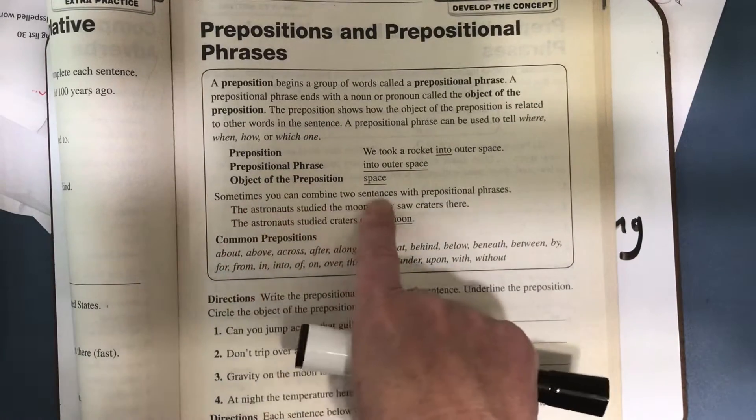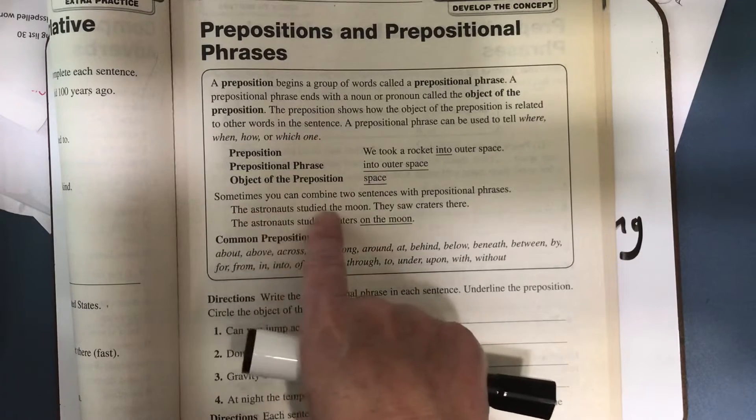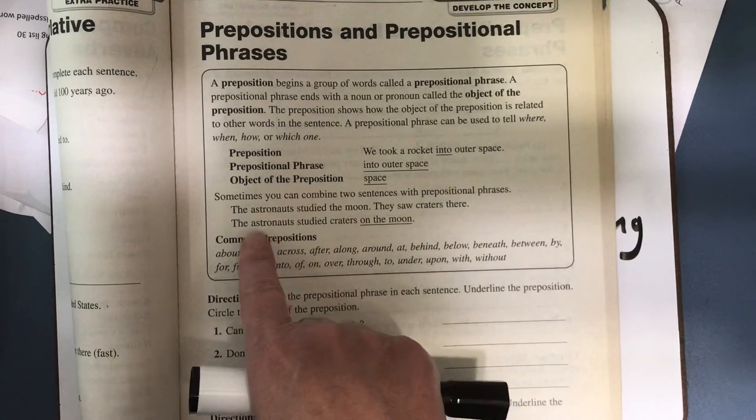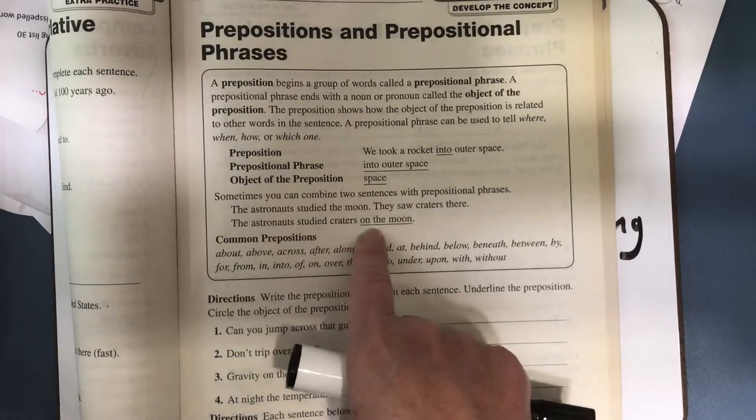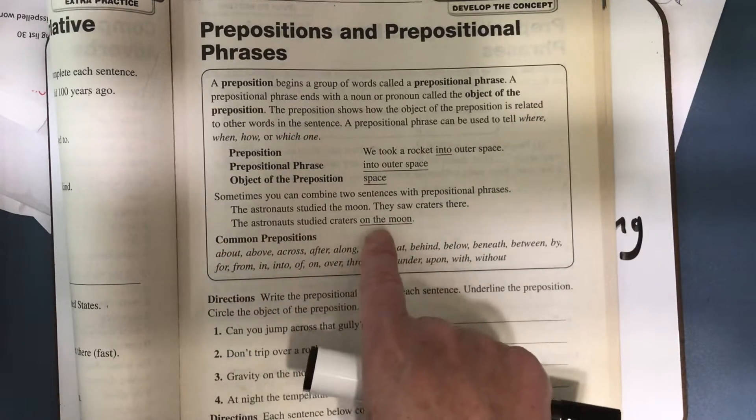Okay, so sometimes you can combine two sentences with prepositional phrases. Here we have the astronauts studied the moon. They saw craters there. The astronauts studied craters on the moon. So it's a better sentence when we join them and use a prepositional phrase.